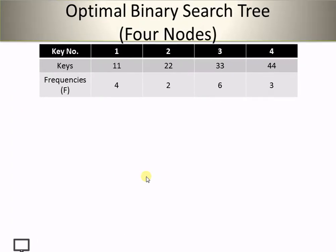Now let's start with the solved example. I have taken four nodes: 11, 22, 33 and 44. Their key numbers are 1, 2, 3 and 4 respectively, with their frequencies 4, 2, 6 and 3 respectively.